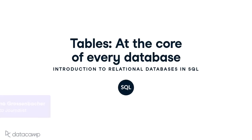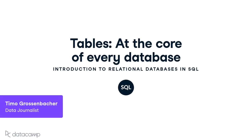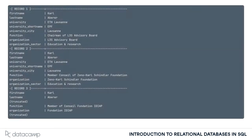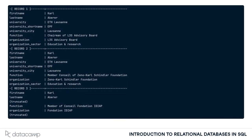Now that you've had a first look at your database, let's delve into one of the most important concepts behind databases – tables. You might have noticed that there's some redundancy in the university professors table. Let's have a look at the first three records, for example. As you can see, this professor is repeated in the first three records. Also, his university, the ETH Lausanne, is repeated a couple of times because he only works for this university. However, he seems to have affiliations with at least three different organizations. So there's a certain redundancy in that table.